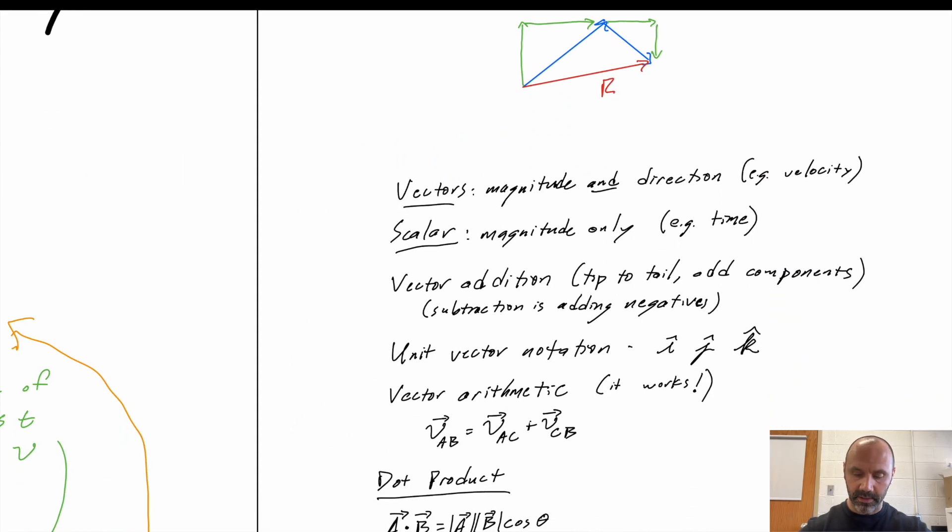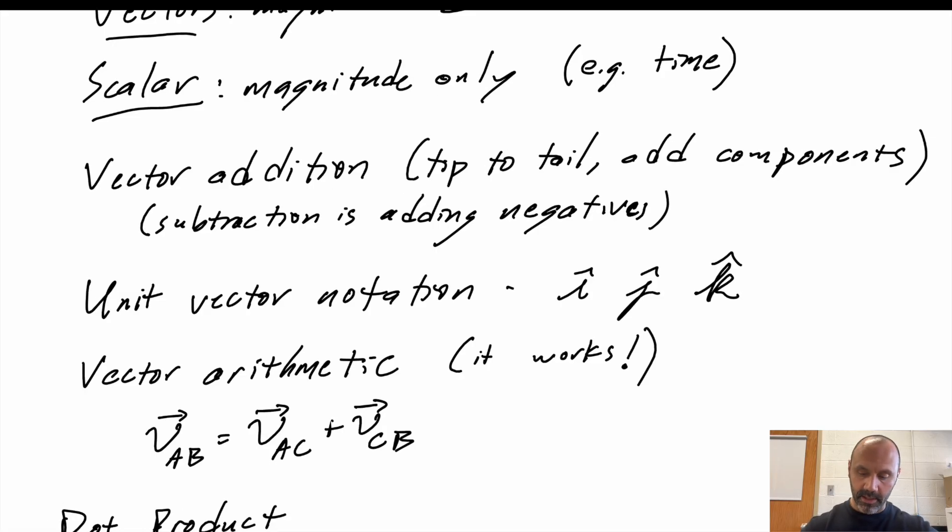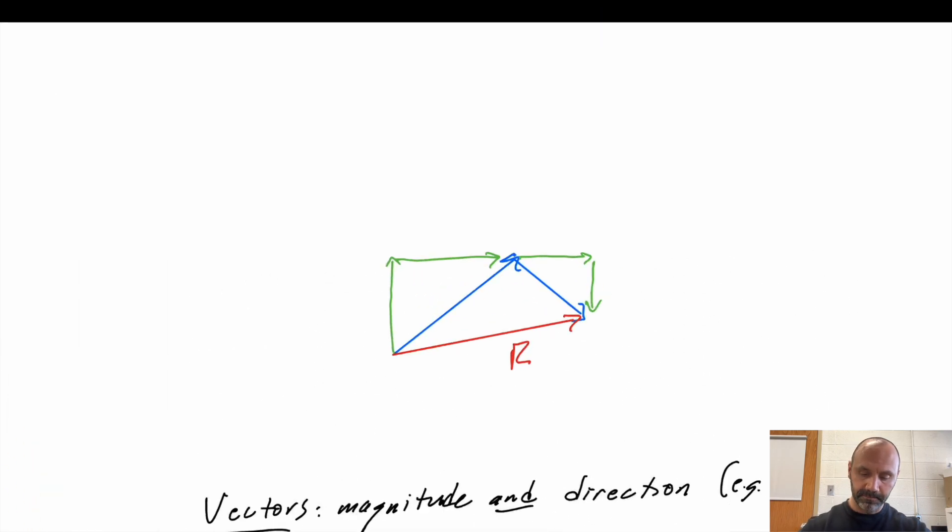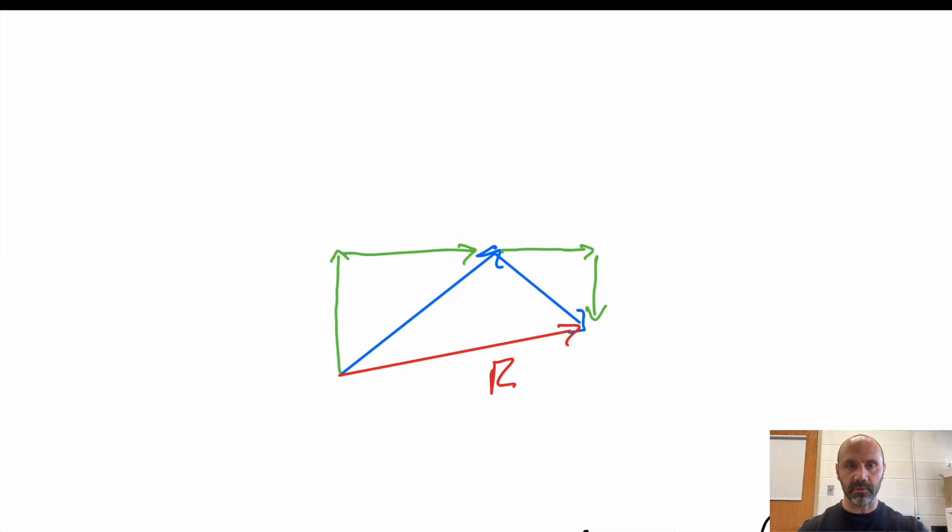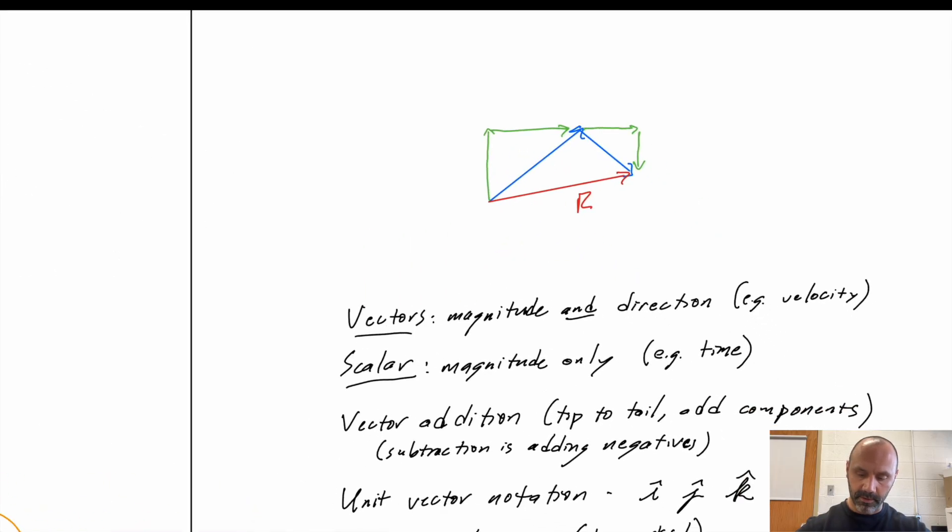Also, when you're splitting things up into components like that, you can use unit vector notation. That's the I, J, K. Don't forget about that. It's extremely useful, very helpful. I is your horizontal, J is your vertical, K is your into or out of the page. Don't forget right-hand coordinate systems. This is just a handy notation to have. And especially when it comes to things like vector arithmetic. I'll show you another thing about vector arithmetic in a minute. But you pay attention to the vectors. And if you have this all in unit vector notation, then it works. And you can have everything in unit vector notation. You just add the I's, add the J's, add the K's. Same thing as what you're doing here when you're adding up the components. I, J, K is just a different way. It's a notation for paying attention to those components.